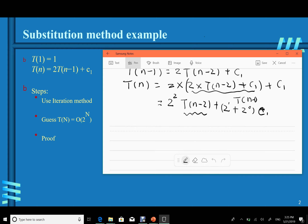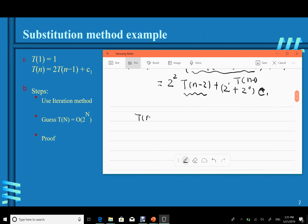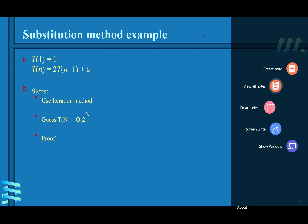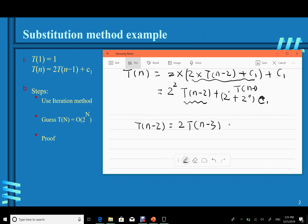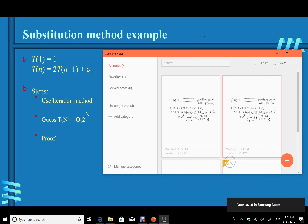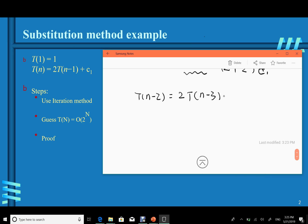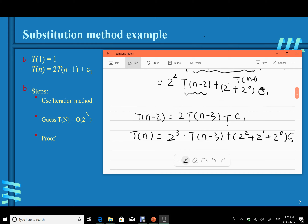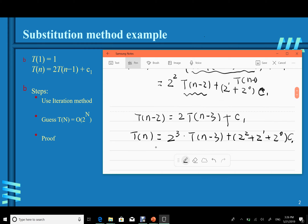T(n−2) can be replaced: T(n−2) = 2·T(n−3) + c1. So T(n) = 2³·T(n−3) + [2² + 2¹ + 2⁰]·c1. We continue this substitution procedure repeatedly.